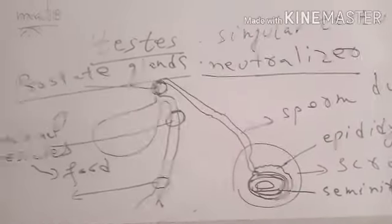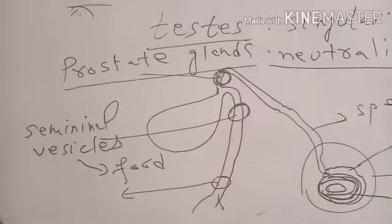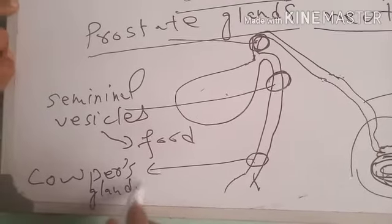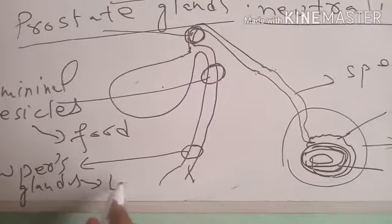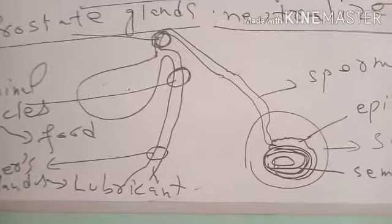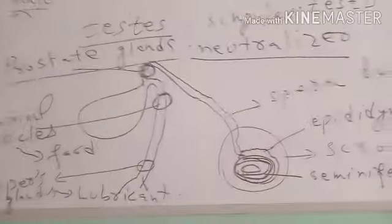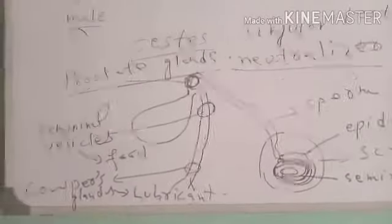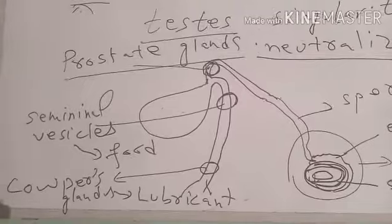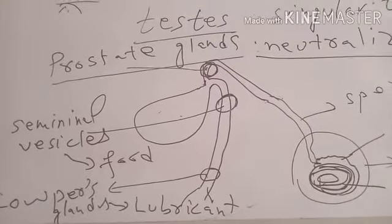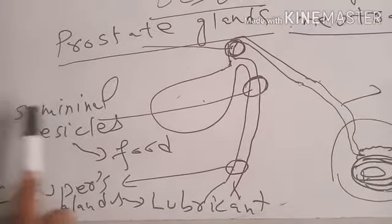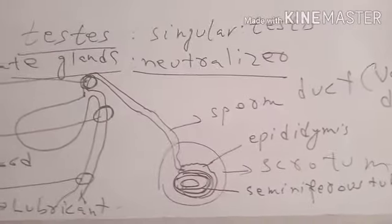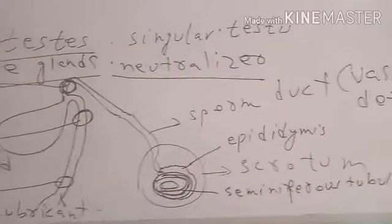The last exocrine glands associated with the testes and male reproductive system are called Cowper's glands. Cowper's glands add a lubricant to the semen or sperms. This lubricant acts like a grease and helps the sperms or semen to be ejaculated at a faster rate and to reach the required area of the female's reproductive tract. In summary, the reproductive system of the male rabbit consists of Cowper's glands, seminal vesicles, prostate gland, testes, epididymis, sperm duct, urethra, and scrotum.